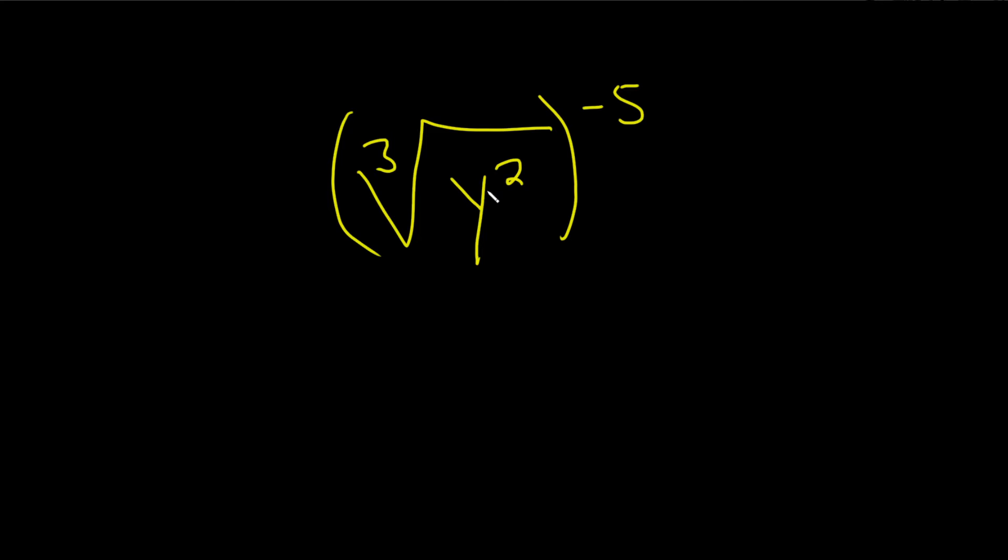So when you have something like this on the inside, it's always this number over this number. Always. So it's y to the 2 over 3.